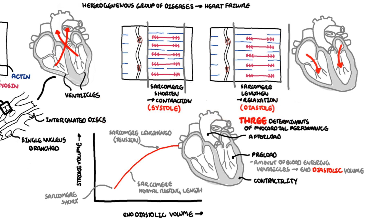Afterload is the other determinant of cardiac muscle function — it is the force the cardiomyocytes must overcome to pump blood out of the body. Contractility of the heart muscle can be independent of preload; for example, the autonomic nervous system and ions can influence cardiac contractility.